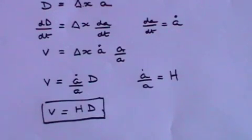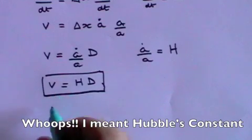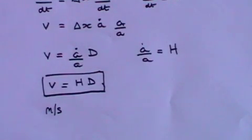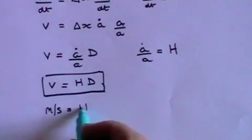What are the units of Hubble's constant? Well, the unit of velocity is meters per second in SI units, and the unit of distance is of course meters.